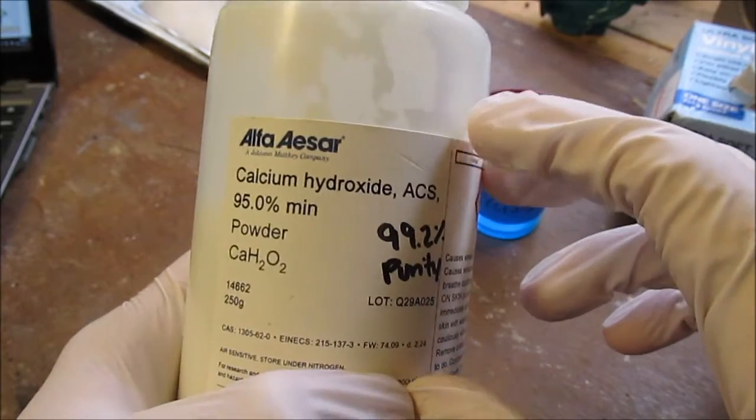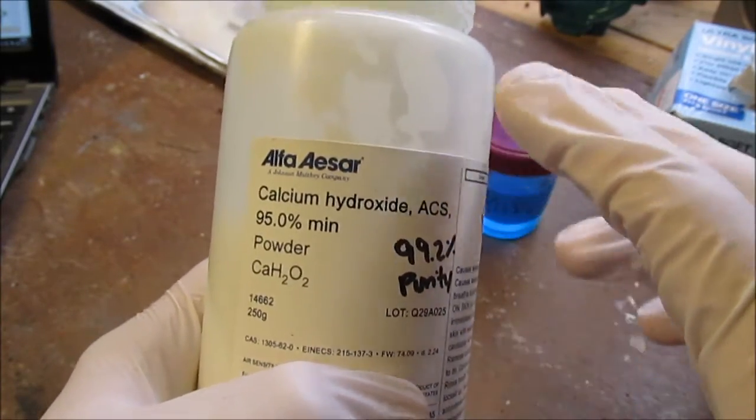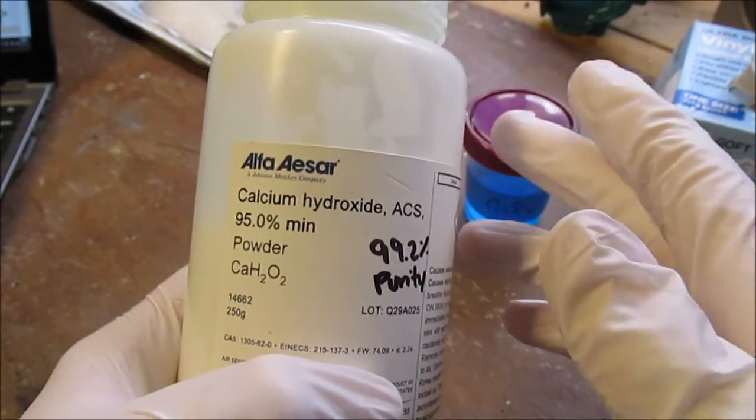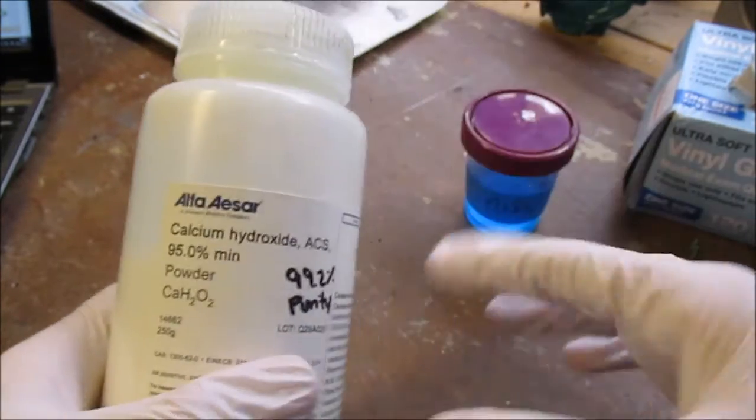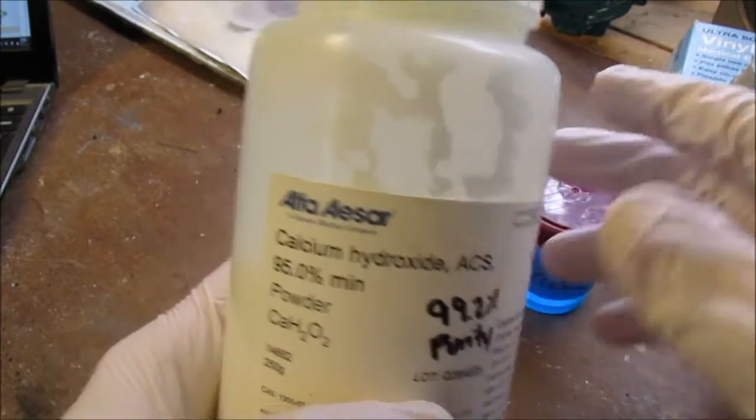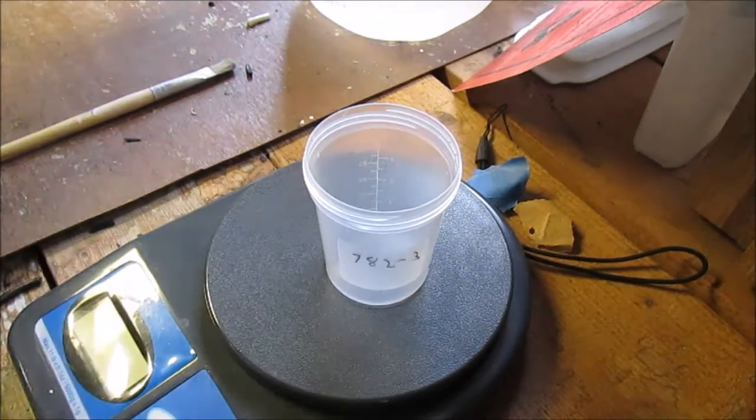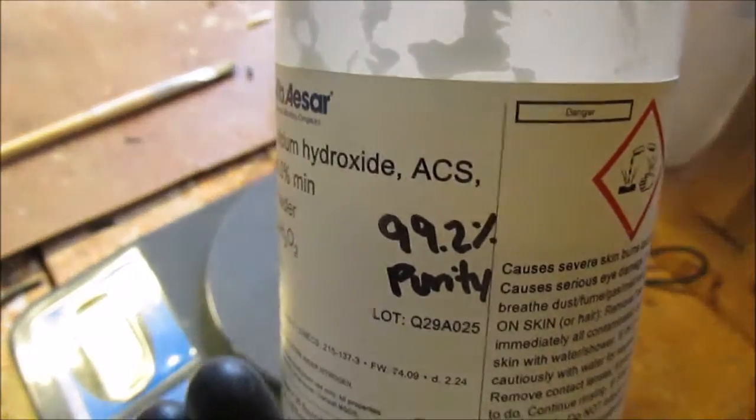I'm going to be using 7.4 grams of it, which is approximately one mole, since it's a one-to-one molar reaction between these two. Okay, so step one is to measure out your reactants. So I'm going to start with adding in 1.4 grams of calcium hydroxide.